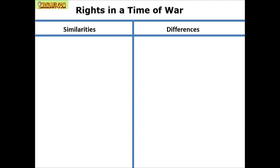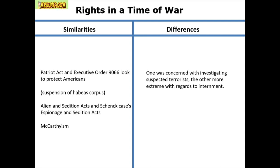Rights in a time of war: John Adams' Alien and Sedition Acts, the Espionage and Sedition Acts of World War I, the Supreme Court's 'clear and present danger' ruling, Lincoln suspending habeas corpus, Executive Order 9066 and Japanese internment challenged by the Korematsu case — all very similar. In times of war, the Supreme Court has said civil liberties can be curbed. The Patriot Act after 9/11 allows further surveillance of suspected terrorists. You walk a fine line on rights during war or conflict. Differences: the Patriot Act concerns terrorism, while others address internment or communism.